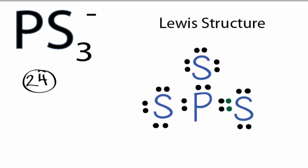The problem is that the formal charges are a little bit off. You can see phosphorus has a +2 formal charge, and those two sulfurs with single bonds have a -1 formal charge.